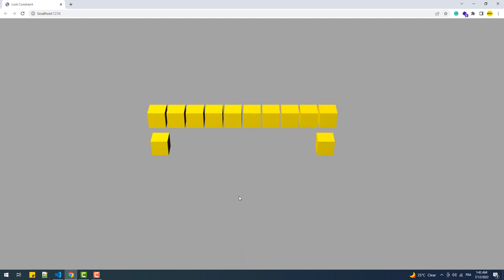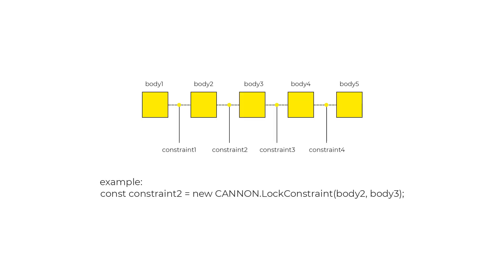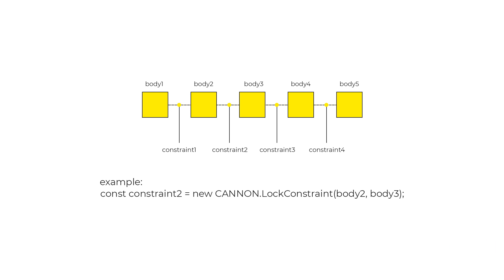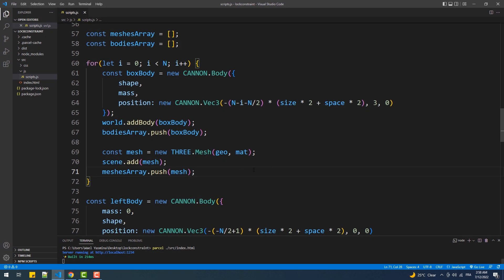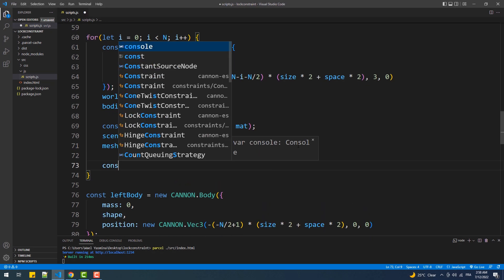Now, how do we turn that set of boxes into a system whose movement is dependent on each one of its components? The answer is simple: using the lock constraint to attach the boxes to each other. It's a class that takes three arguments — the first and second are the two bodies to link, which is our main focus, and the third is an optional object to set the max force of the lock constraint. Let's get back into the code editor and create an instance of the lock constraint class.